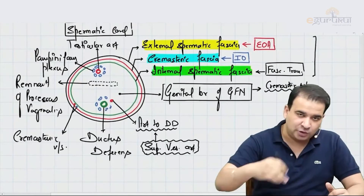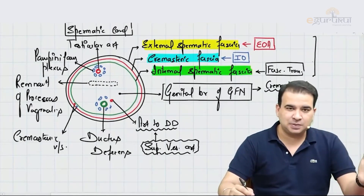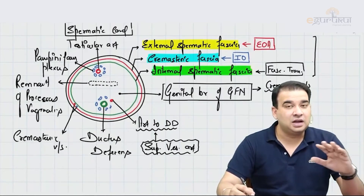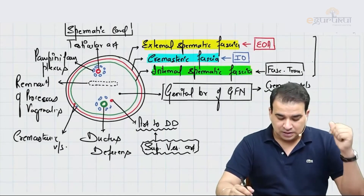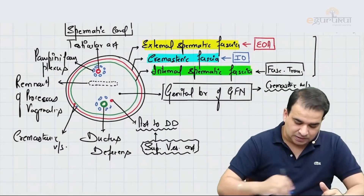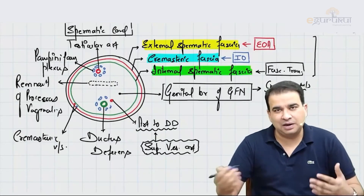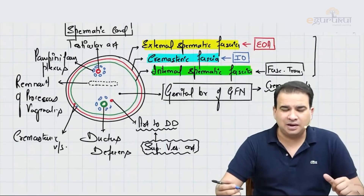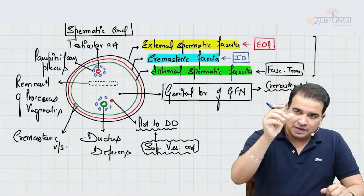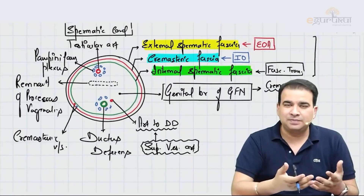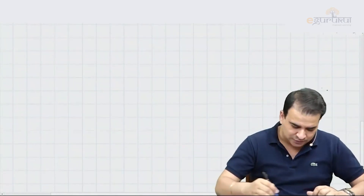The important thing is to know what layer continues as which layer of the spermatic cord: external oblique aponeurosis forms the external spermatic fascia, cremasteric layer comes from the internal oblique, nothing from the transverse abdominis, and fascia transversalis continues to form the internal spermatic fascia. All these contents of the spermatic cord are ultimately also the content of the inguinal canal. Now, the layers of the spermatic cord will obviously run around the scrotum as well, so the layers in the scrotum are also corresponding.